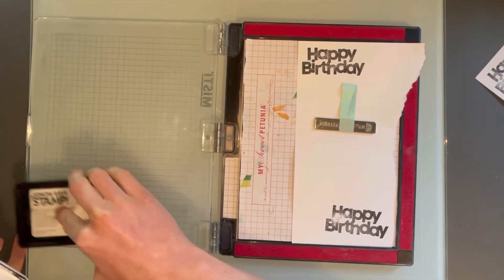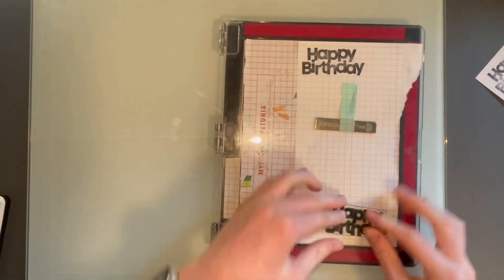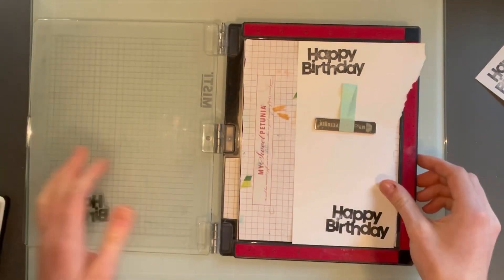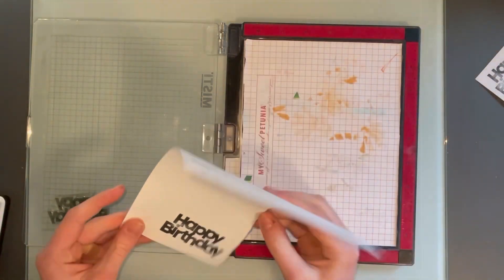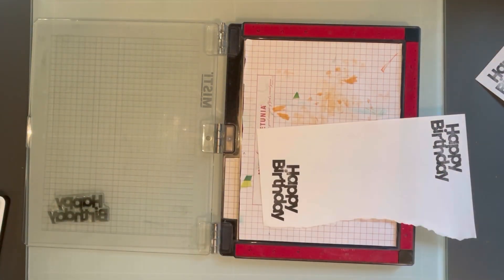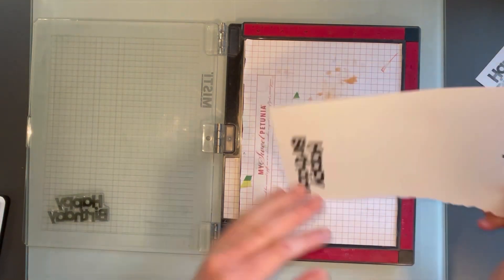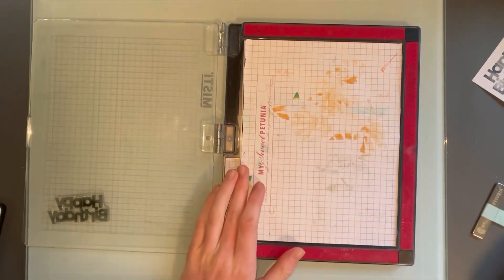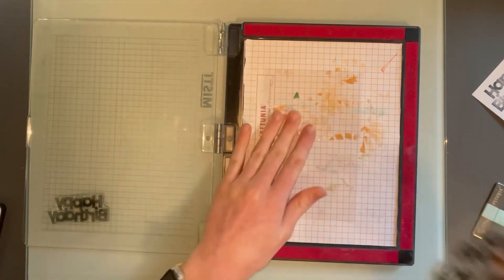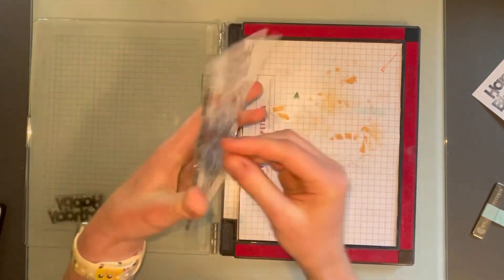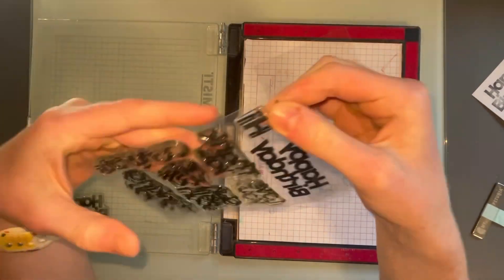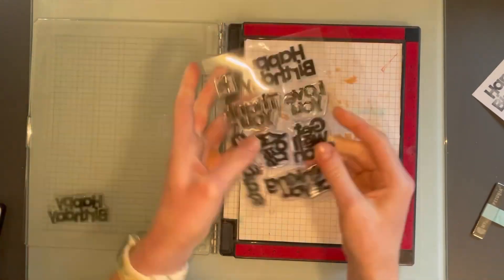Now, my most favorite item is the Misti stamping tool. This one is definitely for more advanced crafters and you can see you can double stamp without the image shifting, which is a really nice feature of the Misti that I really love. I definitely did not invest in this product when I first got into stamping. It's definitely worth it though if you want to go that route, but it is definitely more expensive.